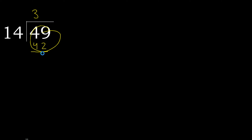Ok, subtract — 7. Next, that is not a whole number, therefore complete. Always complete with 0 here, with a decimal point — 0 point.